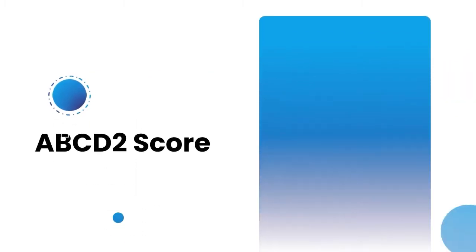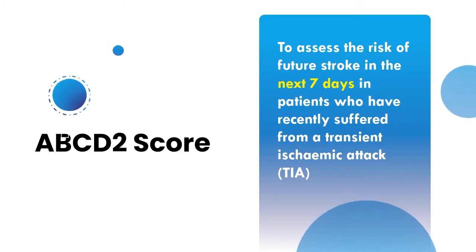So what is ABCD2 score? It's a score which is used to assess the risk of future stroke in the next seven days in patients who have recently suffered from a transient ischemic attack.